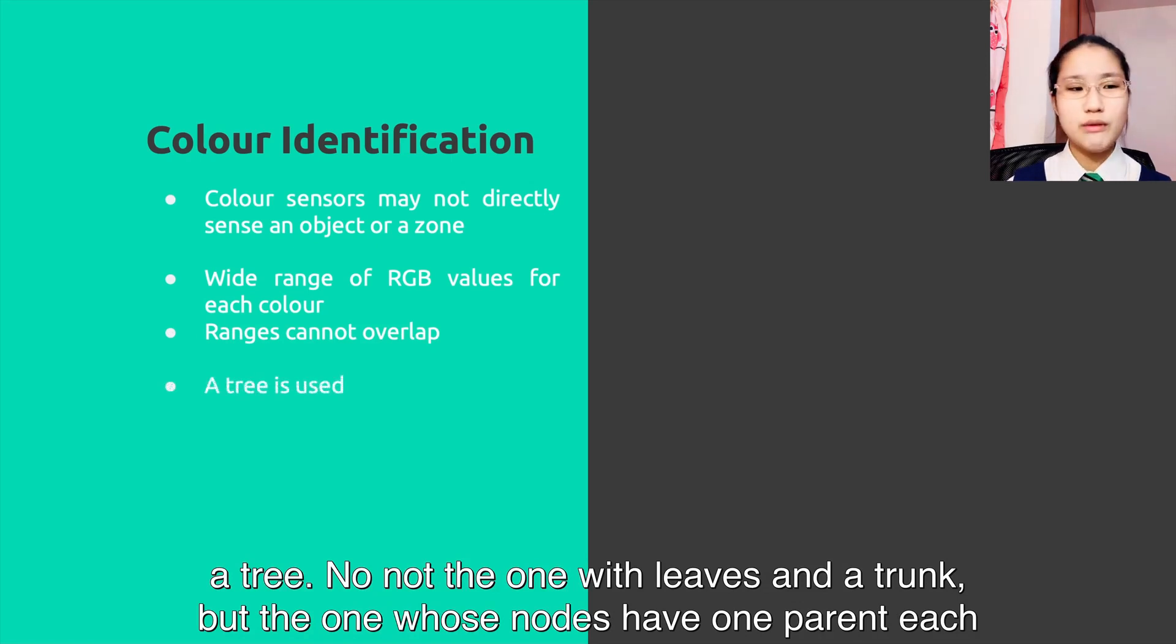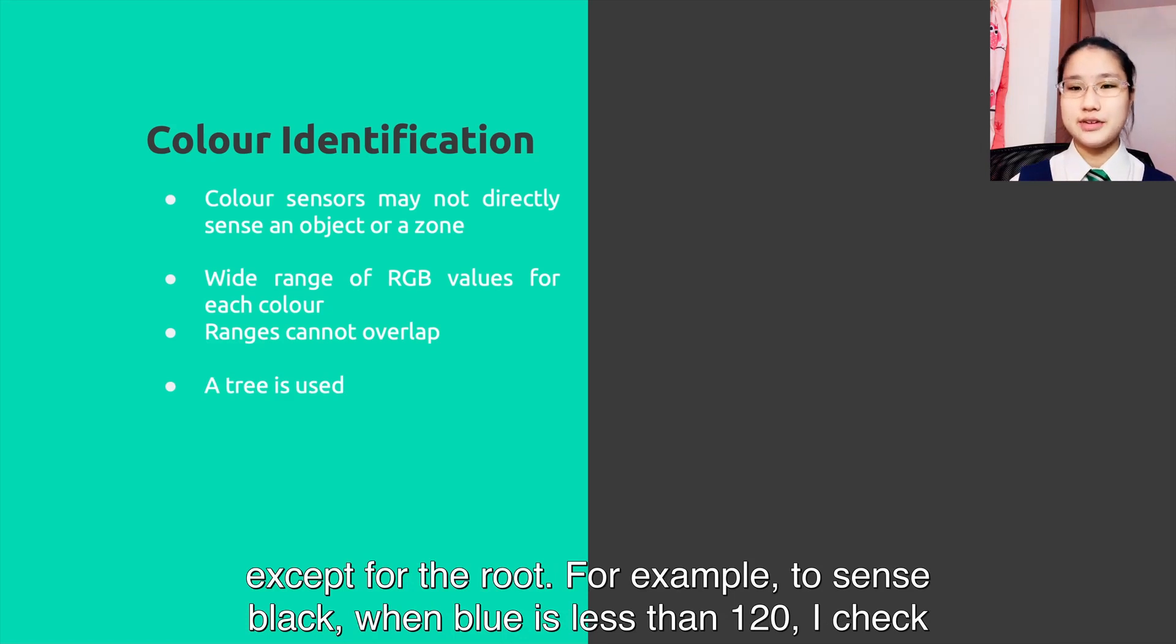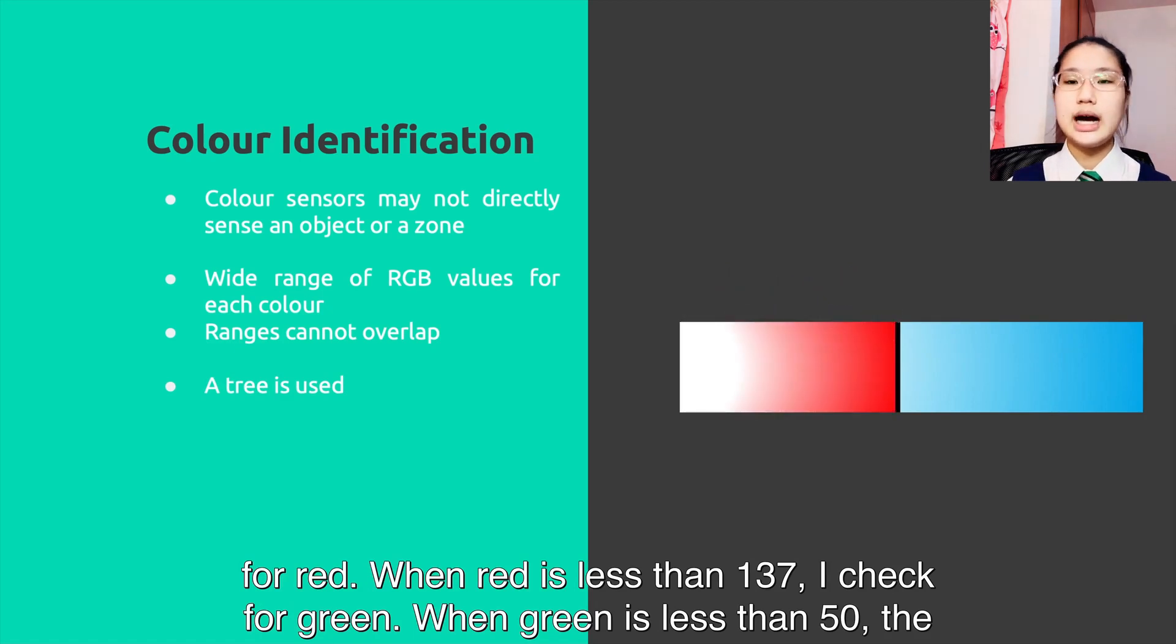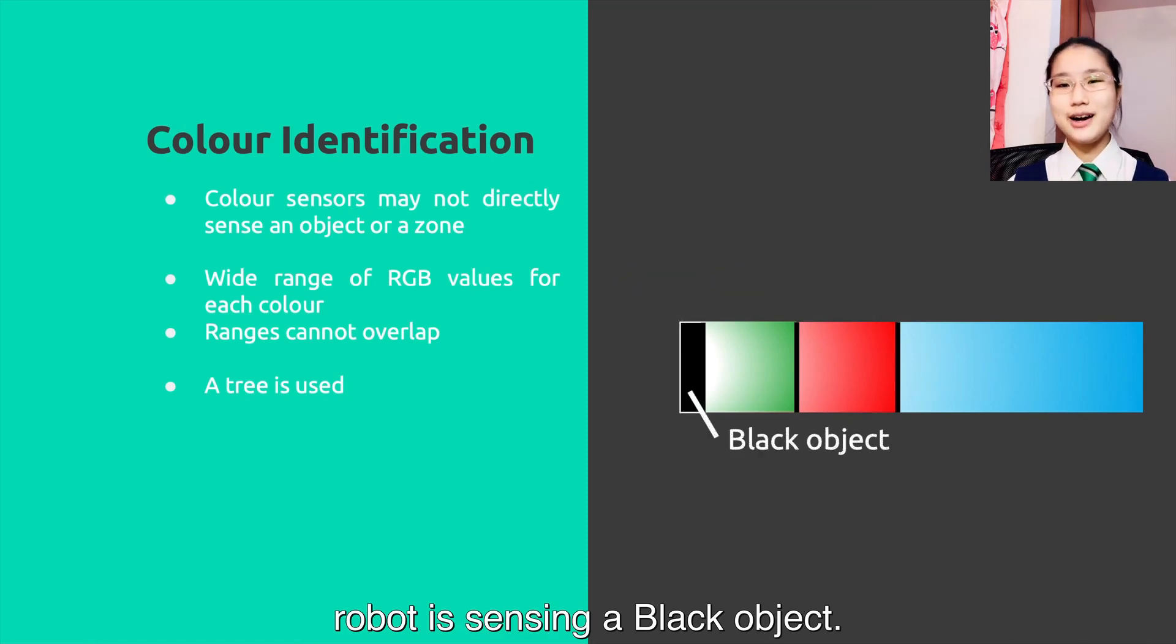However, I must ensure the ranges of one color do not overlap with the ranges of another color. Therefore, I use the tree—not the one with leaves in the trunk, but the one whose nodes have one parent each except for the root. For example, to sense black, when blue is less than 120, I check for red. When red is less than 137, I check for green. When green is less than 50, the robot is sensing a black object.